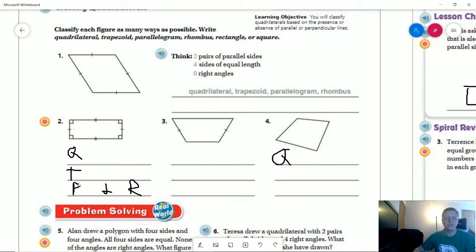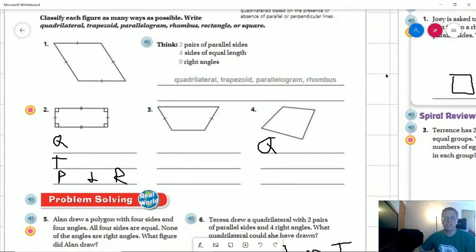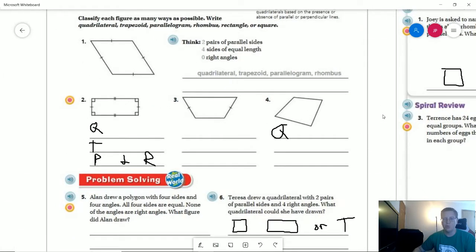We are going to have a parallelogram because we have two pairs of parallel sides, and then we also have a quadrilateral because everything that we are working with is going to be a quadrilateral since we have four sides to our shape. So anything that has four sides is going to be a quadrilateral for the purposes of what we're working with.